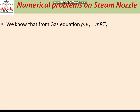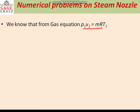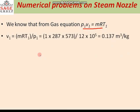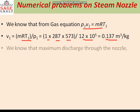From the gas equation, P1 V1 equal to MRT1. So V1 can be written as MRT1 upon P1, which putting the values gives 1 into 287 into 573 upon 12 into 10 to the power 5. That gives 0.137 cubic meter per kg, which is the specific volume.